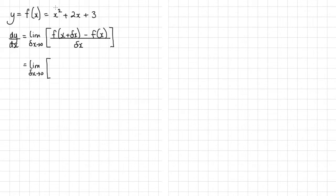So this first term here, we would have x plus delta x. So I've replaced the x with x plus delta x, but obviously that is squared. Plus this time we've got 2x. So it's 2 times x plus delta x plus 3.